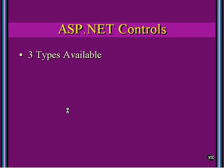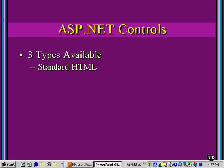There are three types of controls available to the ASP.NET developer. First, there are the standard HTML controls that we're all familiar with. This started back at HTML 1.0 and came up to 3.2 and then to 4.0 and so forth. We can still use all of those on a web page just like before.